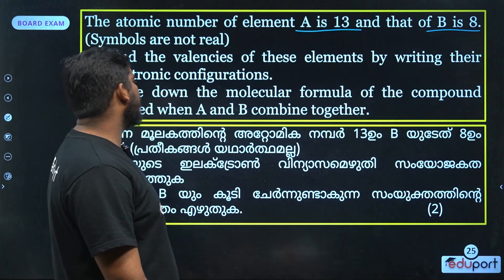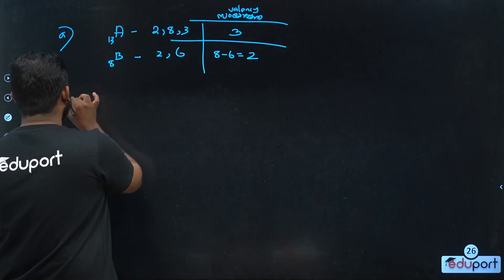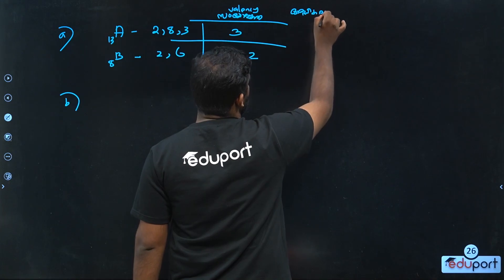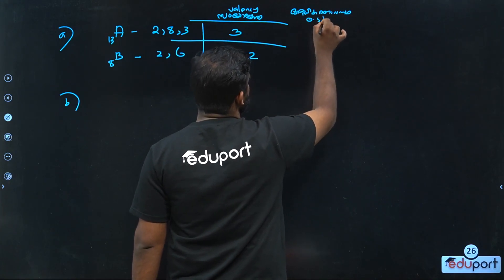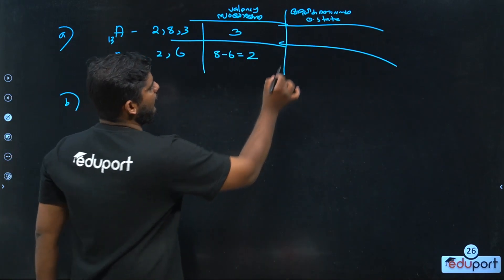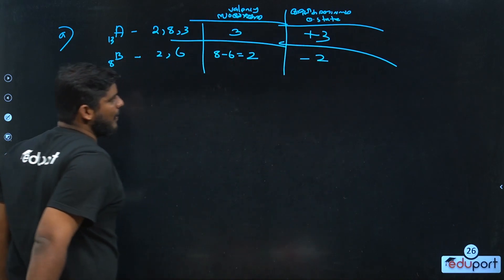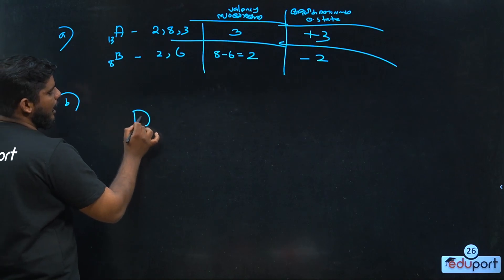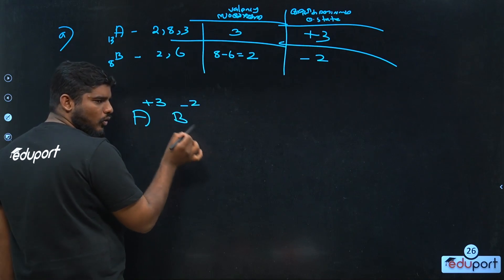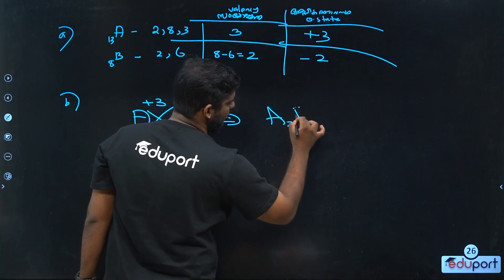Write down the molecular formula of the compound formed when A and B combine. A has valency 3 (less than 4, so positive charge: plus 3). B has valency 2 (greater than 4 relative treatment, so minus 2). Using cross-multiply method: A gets subscript 2, B gets subscript 3. The molecular formula is A2B3.